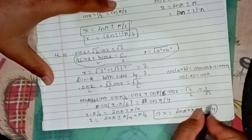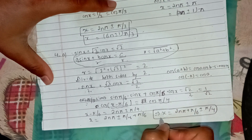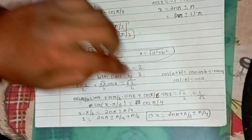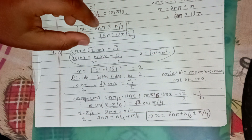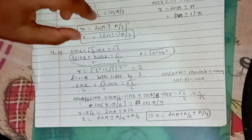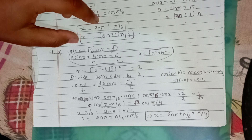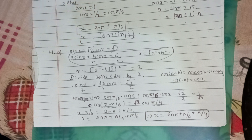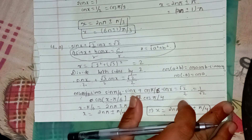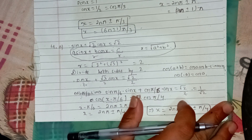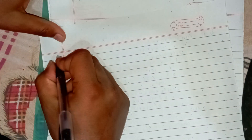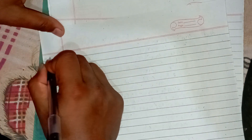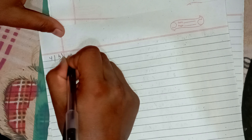So we get x equals 2n pi plus pi by 6 plus minus pi by 4. We can now do question number b.